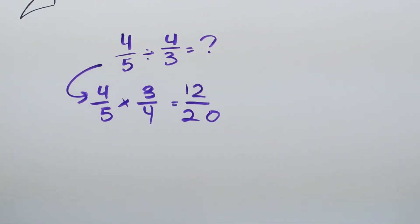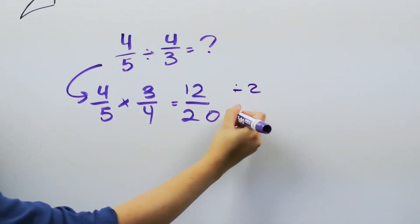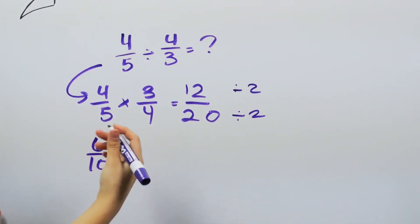But wait, we still have to reduce our fractions. So here's a tip. When both the numerator and the denominator of your fractions are even, divide both numbers by 2 until you get an odd number for either. So if we divide 12 and 20 by 2, we get 6/10. This is still even, so we can divide them again.